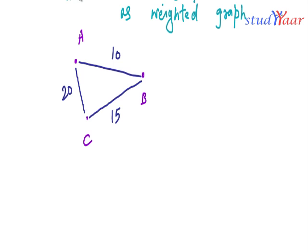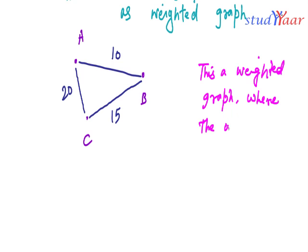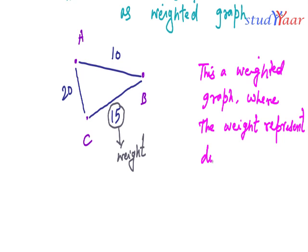This is a weighted graph where the weight is the value associated with your edge. The weight here represents the distance between the cities. Your A, B, C over here are the cities.